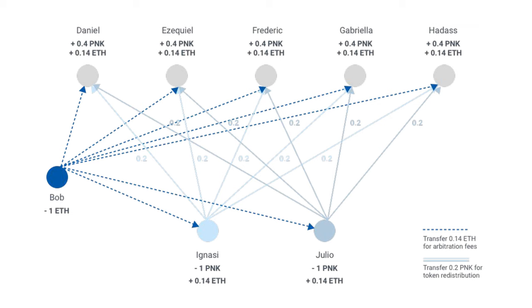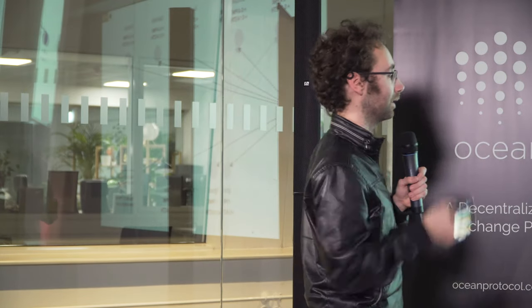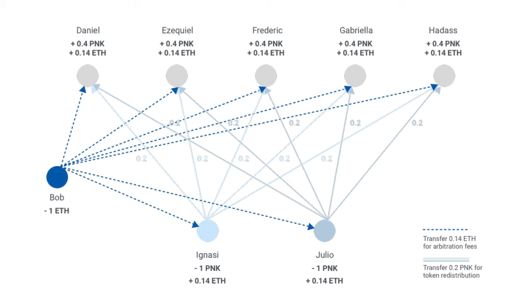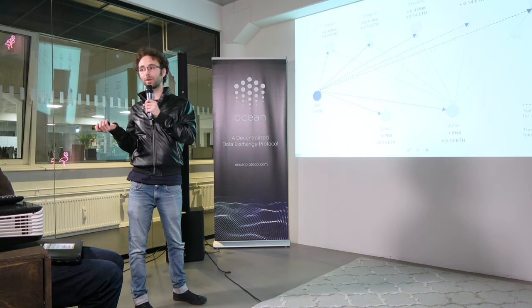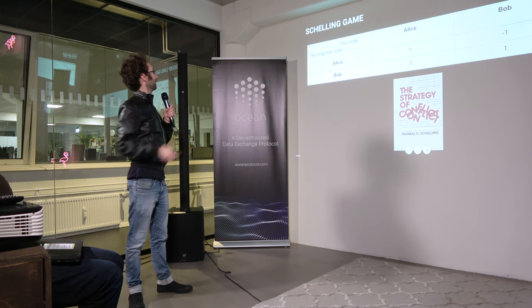Going back to Kleros: we have a way to protect against Sybil attacks by drawing jurors by tokens. But we also want to avoid jurors voting randomly. Without additional incentive, they could vote randomly to get the reward or take bribes to increase earnings. The best proxy for truth we can have is: is their vote coherent with other jurors? A portion of staked tokens is redistributed toward jurors who voted with the majority, so you must vote honestly if you think others will.